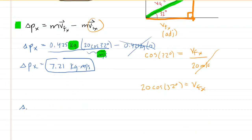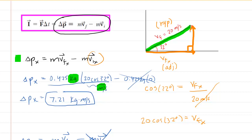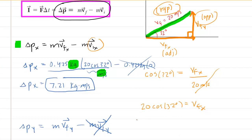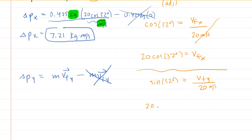We also need the change in momentum in the y direction, which is the mass multiplied by the final velocity in the y direction, minus the mass multiplied by the initial velocity in the y direction. Since the ball was initially stationary, the initial velocity in the y direction was also 0, so that term zeros out. Looking at our picture, the y component is the side opposite to the 32-degree angle, so we use the sine function. Sine of 32 degrees equals the opposite side divided by the hypotenuse of 20 meters per second, giving a final velocity in the y direction of 20 times the sine of 32 degrees, in meters per second.